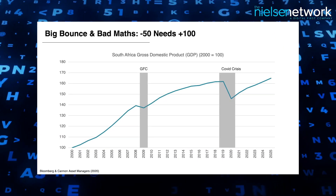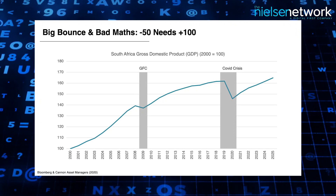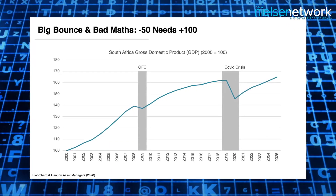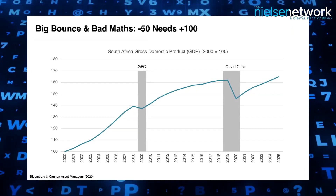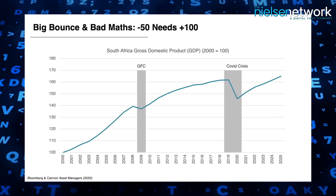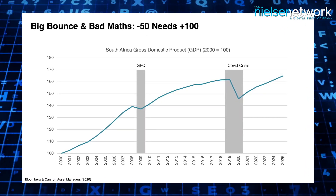If you take the headline number of the week — a 50% fall in GDP in the second quarter — it makes for disastrous reading and there's no way of dressing it up or mistaking it. It was a horrific quarter by every measure; the economy collapsed.